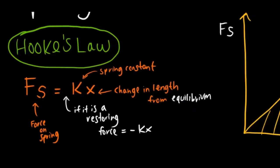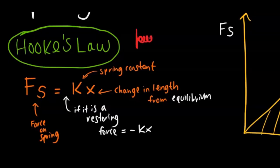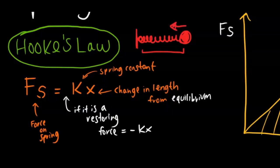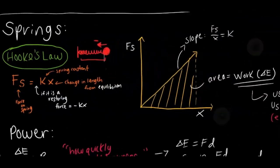Hooke's Law states that the force on a spring equals the spring constant k times the displacement x from the equilibrium position — that's when it's not stretched. When the spring is oscillating, the restoring force is negative kx rather than just kx, because at maximum displacement the force must act in the negative direction to bring the ball back and cause oscillation.